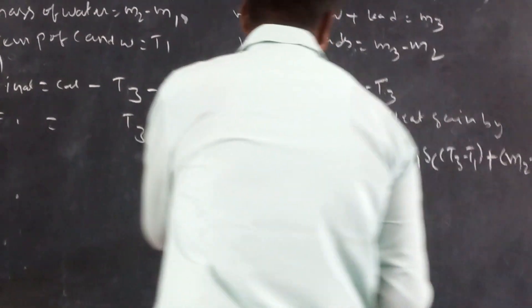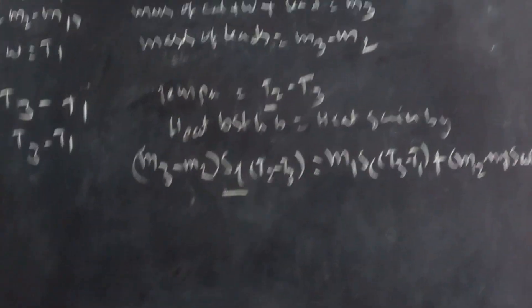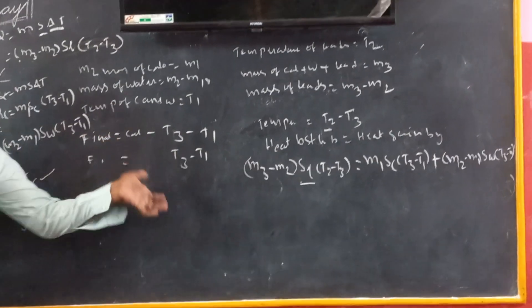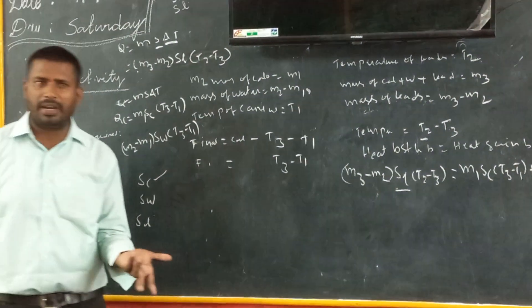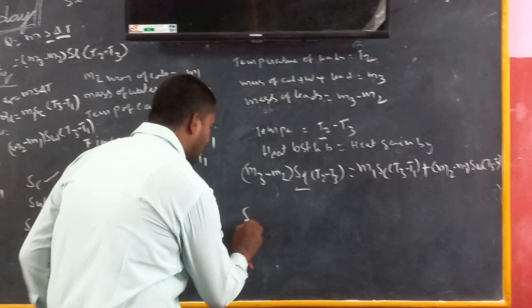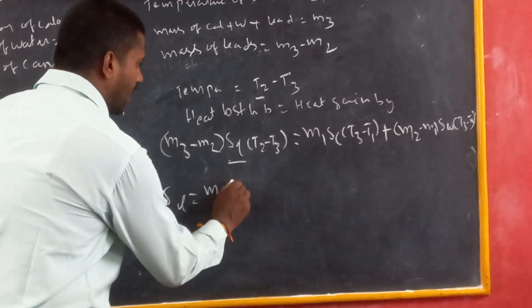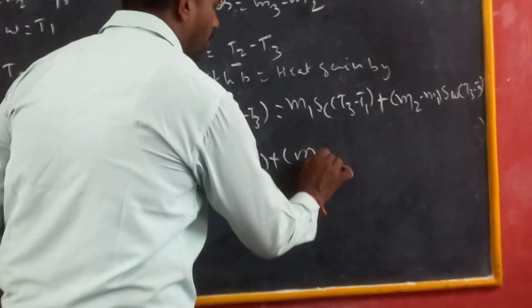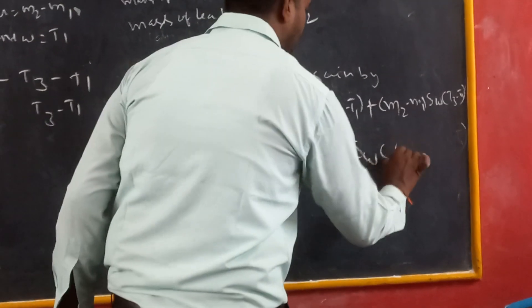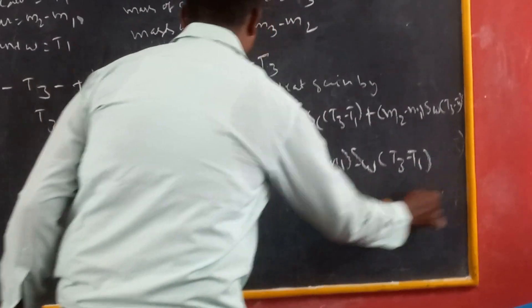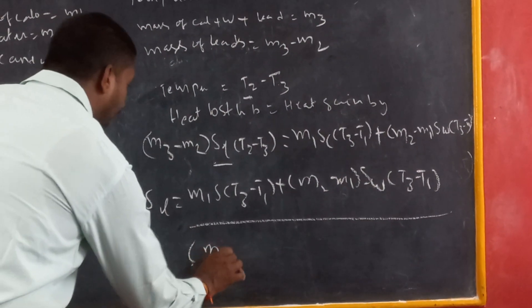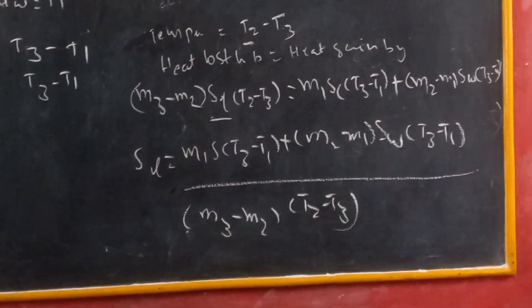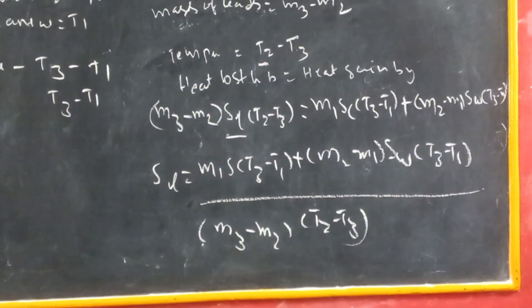If you want to get only the specific heat of lead shots, transfer this product. If the product is transferred from left side to right side, it will become divided by. Hence, we get SL equals to M1 SC (T3 minus T1) plus (M2 minus M1) SW (T3 minus T1) divided by (M3 minus M2) into (T2 minus T3). Hence, we find out the specific heat of the solid experimentally.